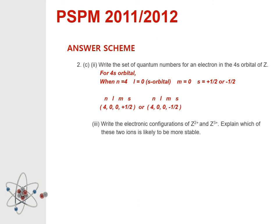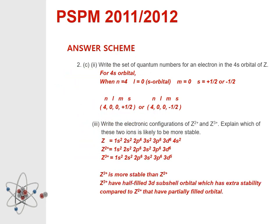Question 2c number 3: Write the electronic configurations of Z²⁺ and Z³⁺, and explain which ion is likely to be more stable. Z³⁺ is more stable than Z²⁺ because Z³⁺ has a half-filled 3d subshell orbital, which has extra stability compared to Z²⁺ which has a partially filled orbital.